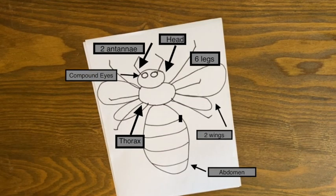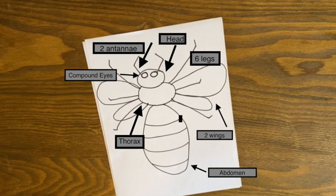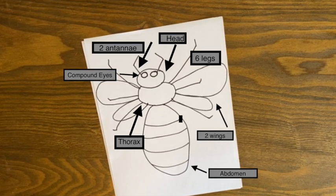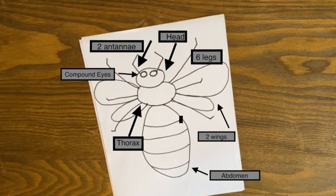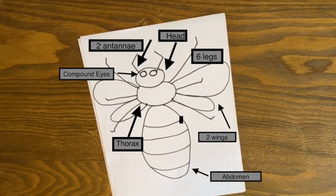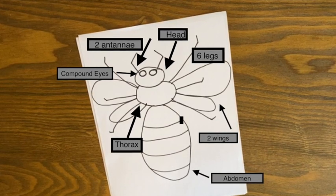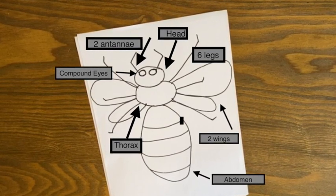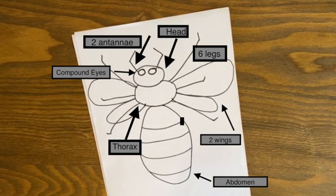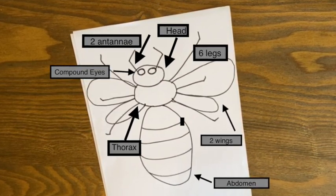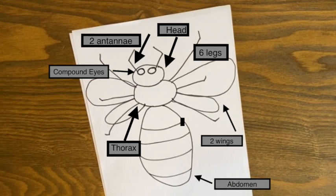We only have two things left. They have compound eyes—two of them. And finally, the last part of the body, which is the abdomen, the third segment. Now you have drawn an amazing insect.